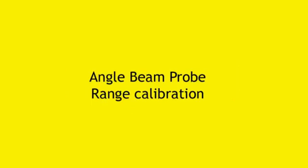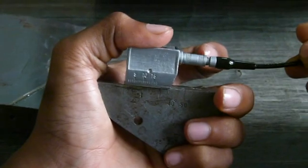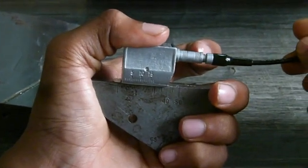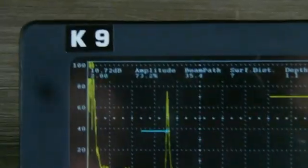This video demonstrates how an angle beam probe may be used to calibrate a particular ridge. A V2 block is used.